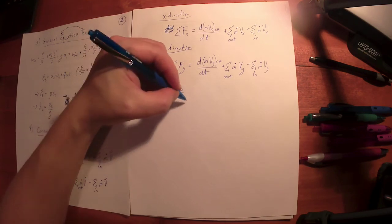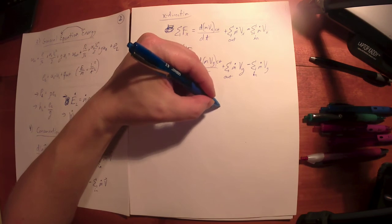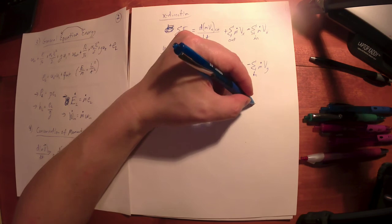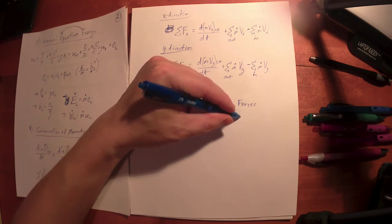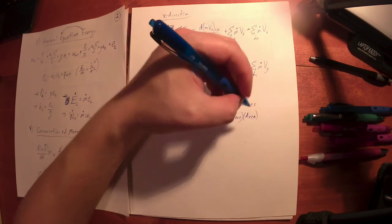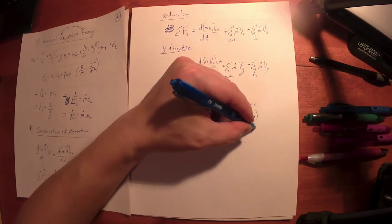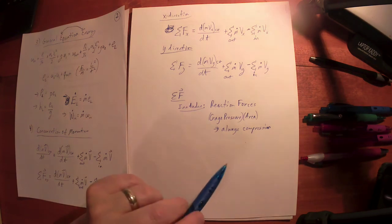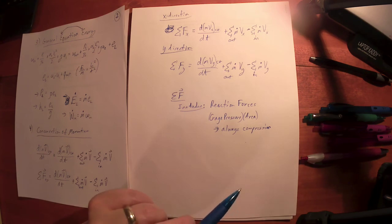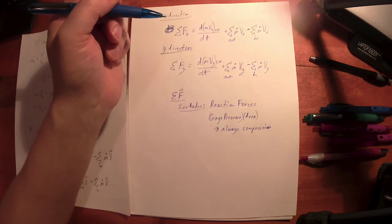So that sum of forces, it's going to include any reaction forces, and most of the time, that's what you're looking for, is what is the force, what is the reaction force required to keep this object stationary. It might include gauge pressure, pressure times the area. Gauge pressure, always in compression. Pressures push, that's what they do. Pressures do not pull on your free body diagram. Pressures will always push, even if that's the opposite direction of flow. If the material's flowing out, the pressure's still pushing in. Pressures always apply a compression force. And so take your gauge pressure times the area, that gives you a force, always draw it pushing on your free body diagram.